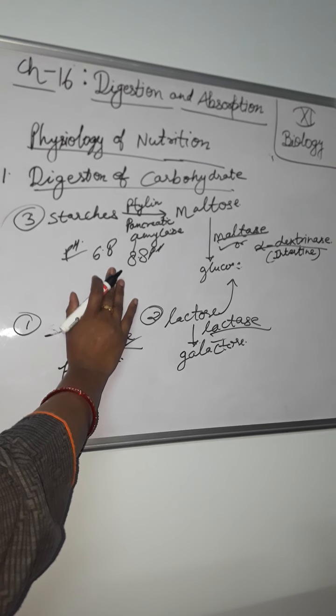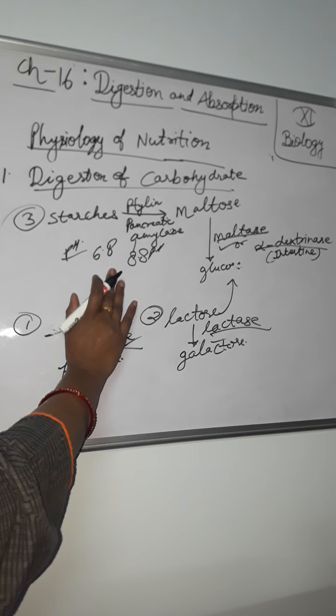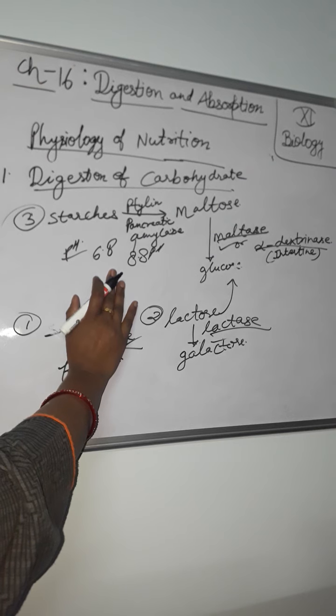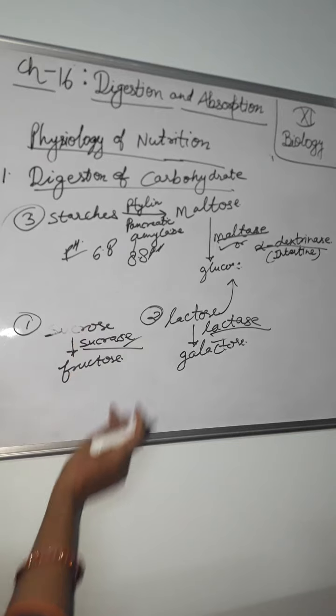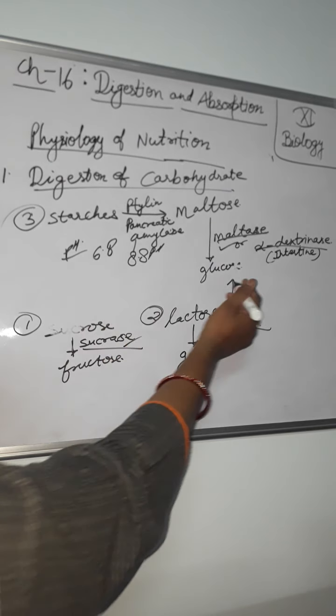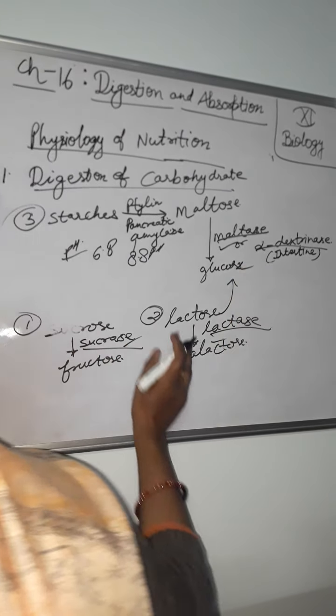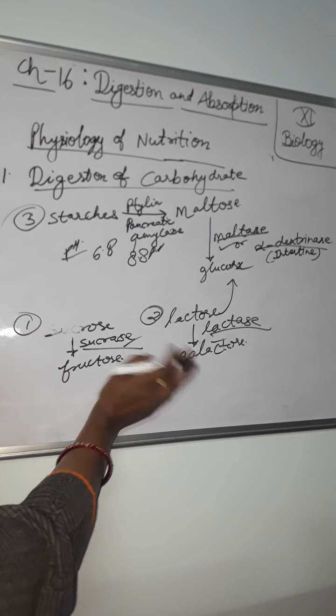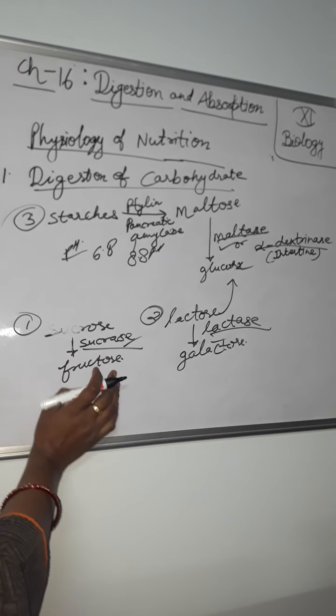Now these enzymes are capable of splitting the disaccharides into monosaccharides. Maltase converts into glucose, lactose converts into galactose and sucrose converts into fructose.